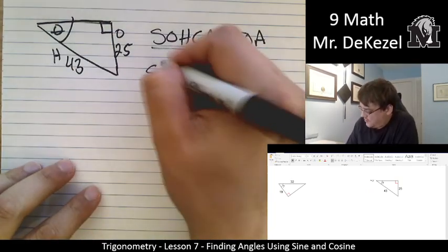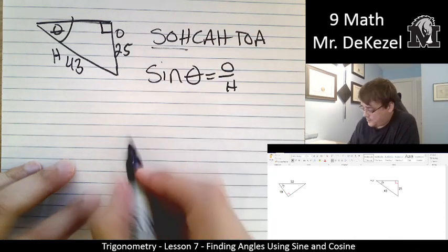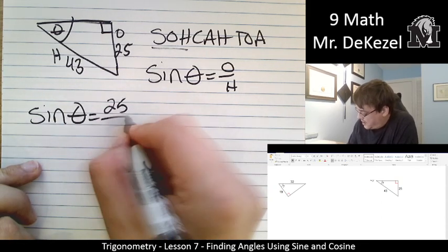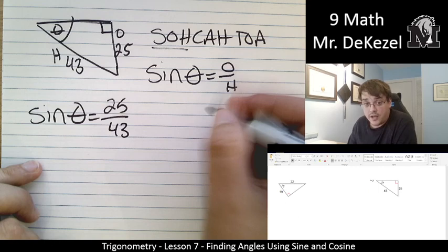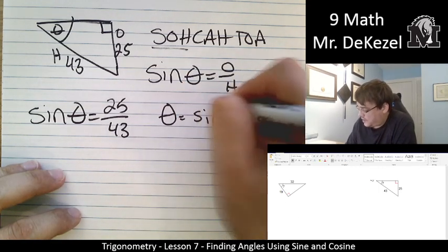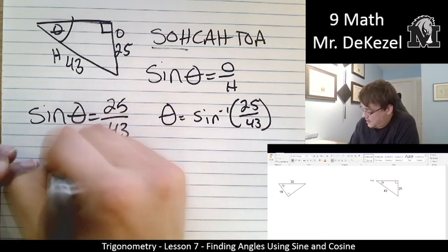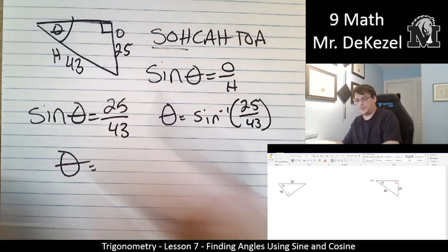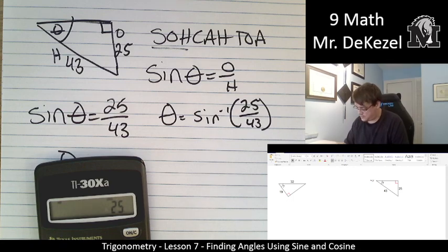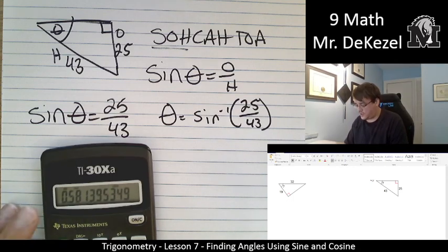Opposite and hypotenuse is sine. We're going to go ahead and use sine theta is equal to opposite over hypotenuse. Sine of theta. Let's input what we know. That's 25 for opposite and 43 for hypotenuse. We're going to inverse sine. Because we're looking for an angle. So, theta. Anytime you're looking for an angle, you're going to use inverse sine. If you're looking for a side, you will not.